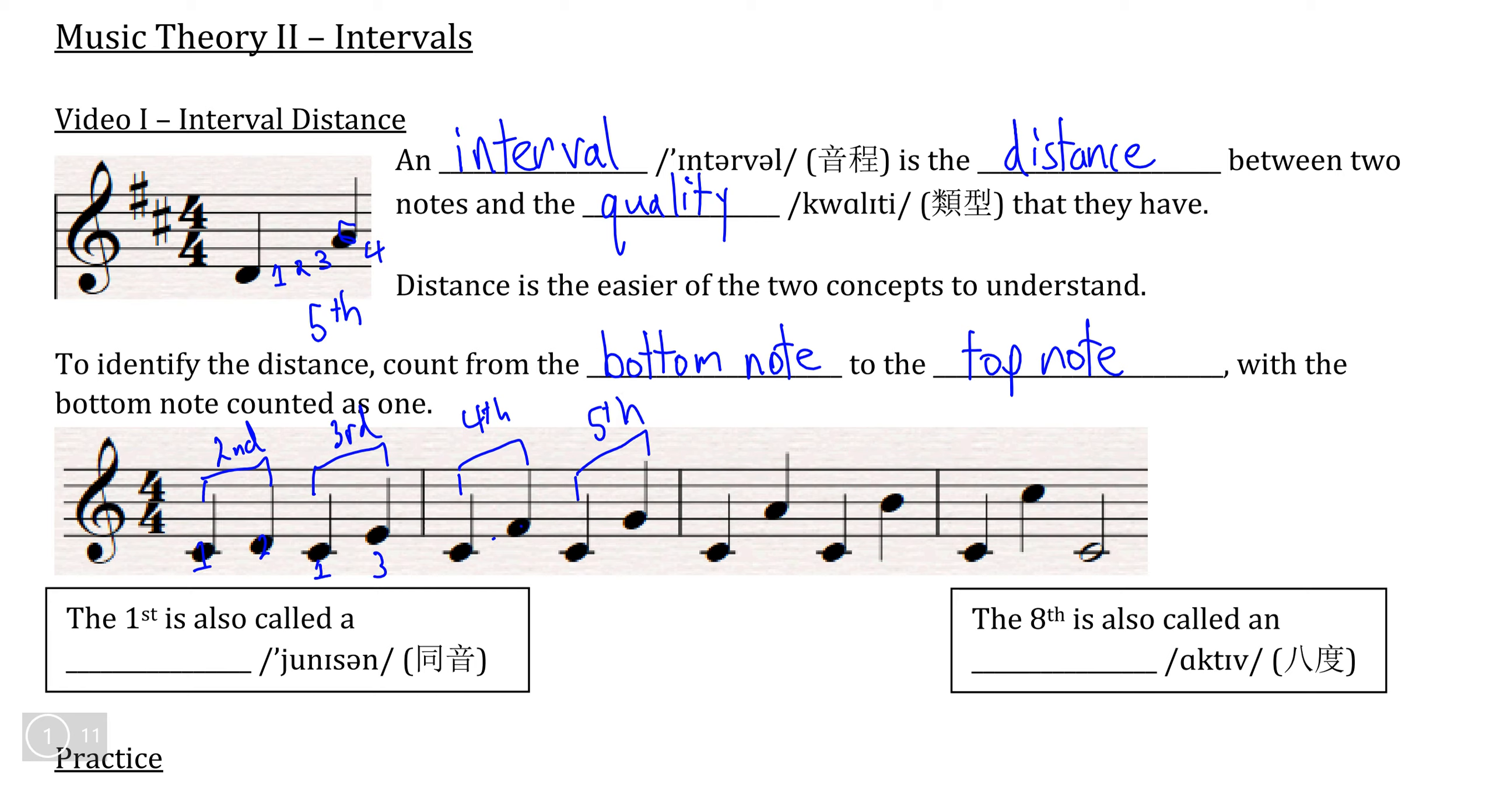C to A, if we count C, D, E, F, G, A, you should have counted a total of six notes. So the distance between C and A is a sixth.